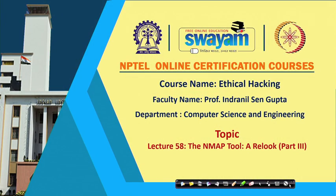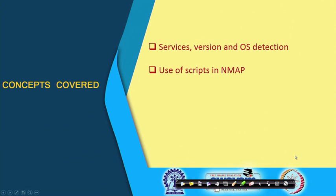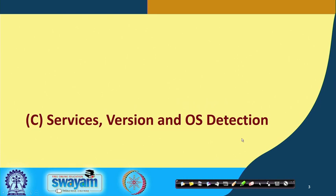We continue with our discussion on nmap. In the previous two lectures we talked about host discovery and port scanning options. In this third part of the lecture, we shall be mainly talking about how to detect services version and OS detection options, how to use nmap scripts, and some very common example options that we typically use in nmap.